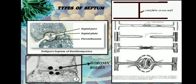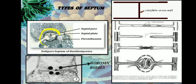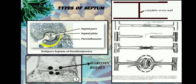The dolipore septum is capped on either side by a specialized membrane called the parenthosome. This parenthosome is usually derived from the endoplasmic reticulum.